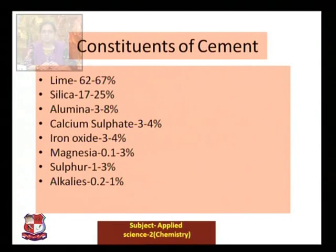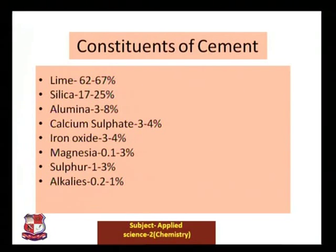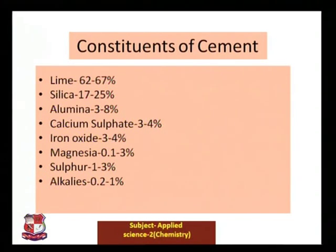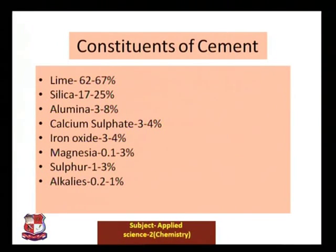Let us see the constituents of cement. Lime is present at approximately 62 to 67 percent. Silica is 17 to 25 percent. Alumina content varies from 3 to 8 percent. Calcium sulfate varies from 3 to 4 percent. Iron oxide varies from 3 to 4 percent. Magnesia ranges from 0.1 to 3 percent. Sulfur content varies from 1 to 3 percent. Alkalies are also present at 0.1 to 1 percent. Depending on the proportion of these constituents, the properties of cement will change.